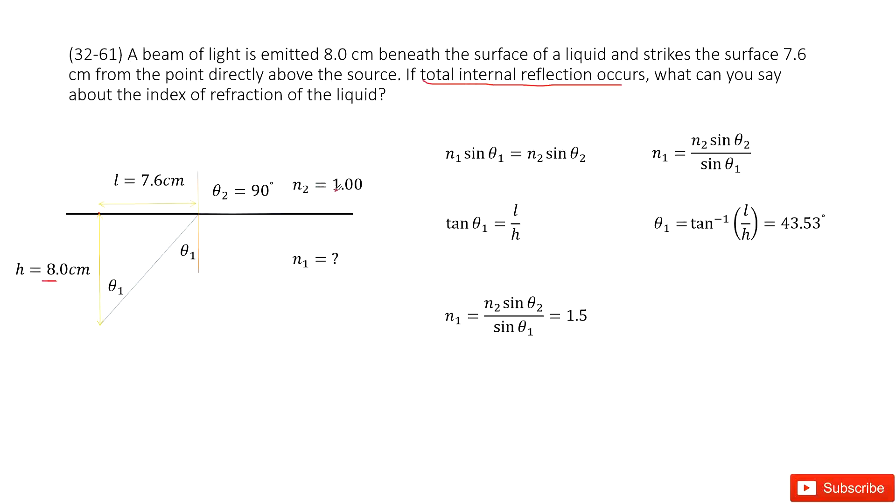Now it looks like we can write down Snell equations to find the N1. So we can say N1 sin θ1 equal to N2 sin θ2. Then N1 we don't know, we want. And θ1 we don't know. N2 is given. θ2 is given. So it looks like we must find the θ1 before we know the N1.